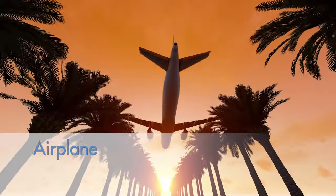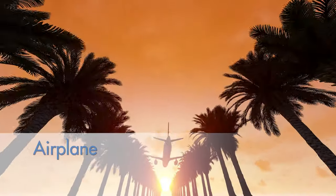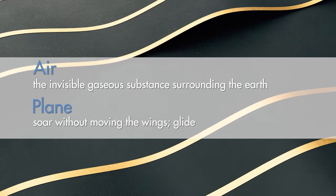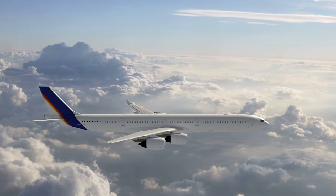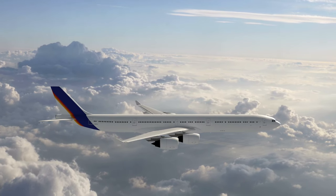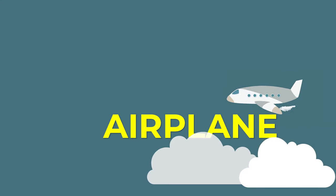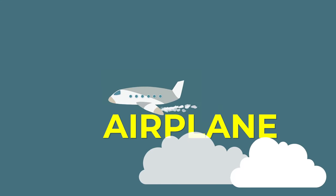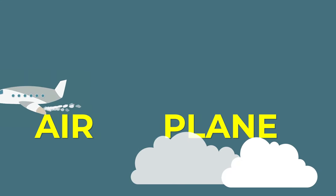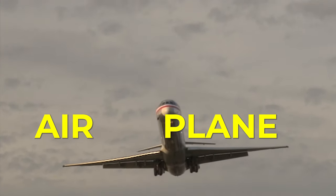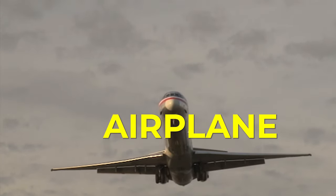Look again at the compound word airplane. You know what the words air and plane mean, and you know that the definition of air is different than the definition of plane. But did you notice that when you put the two words air and plane together, the new word airplane also has a different meaning? When the word airplane is separated into two words, air and plane, can you see how airplane got its name? It's a plane that flies in the air!